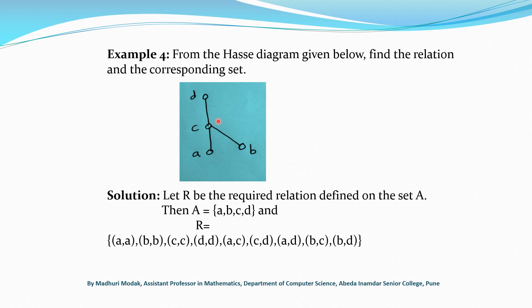From the Hasse diagram given below, find the relation and the corresponding set. In previous examples, we were given the relation and drew the Hasse diagram. Now, given the Hasse diagram, we write the corresponding relation. First, see which elements are present in the diagram: A, B, C, D. The relation is defined on the set {A, B, C, D}. As every element is related to itself, we write all reflexive pairs: (A,A), (B,B), (C,C) and (D,D).